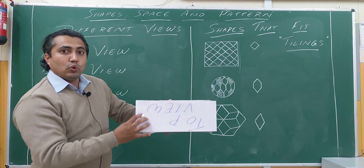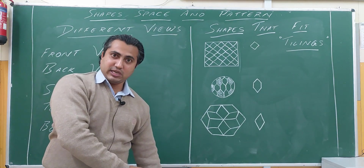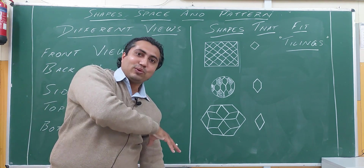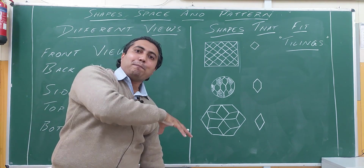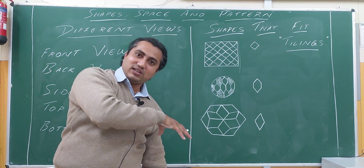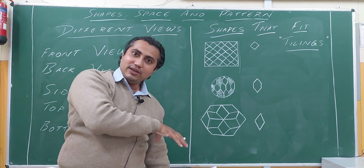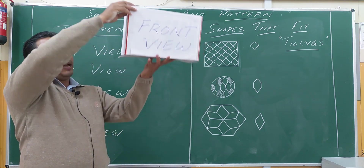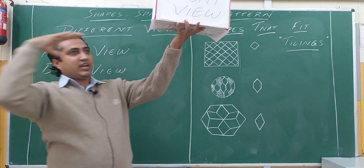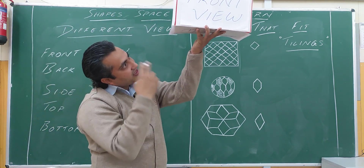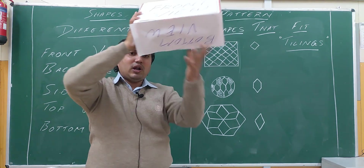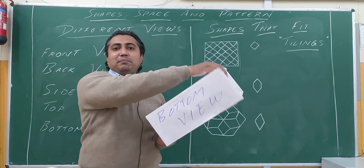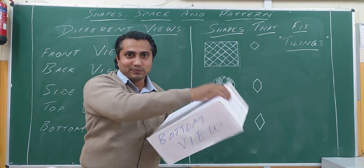Now, top view. Suppose this box is lying like this and we are looking from above — so we can have the top view of the box. This is the top view. Now suppose this box is lying such that we are looking from below — that is called the bottom view.